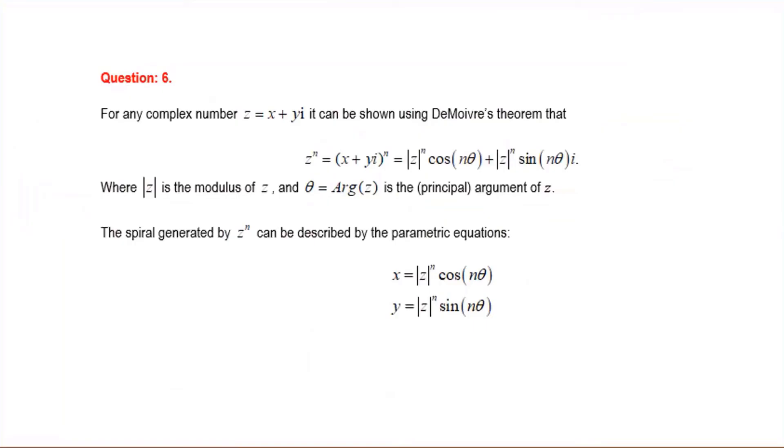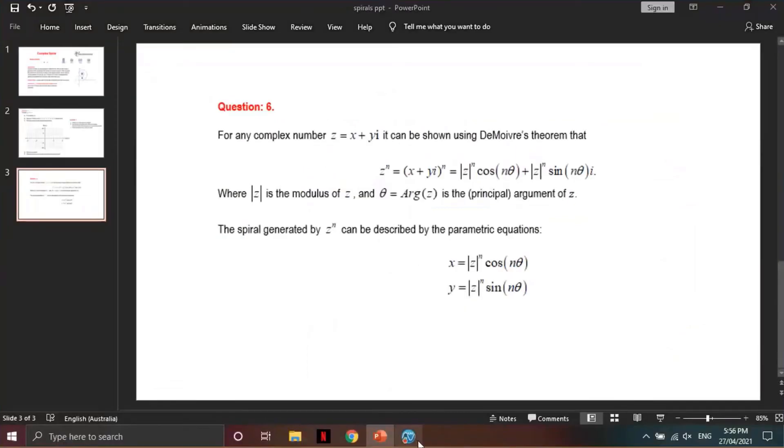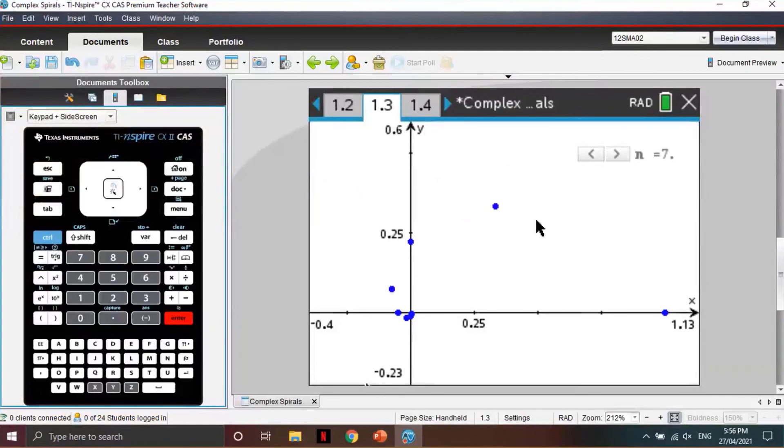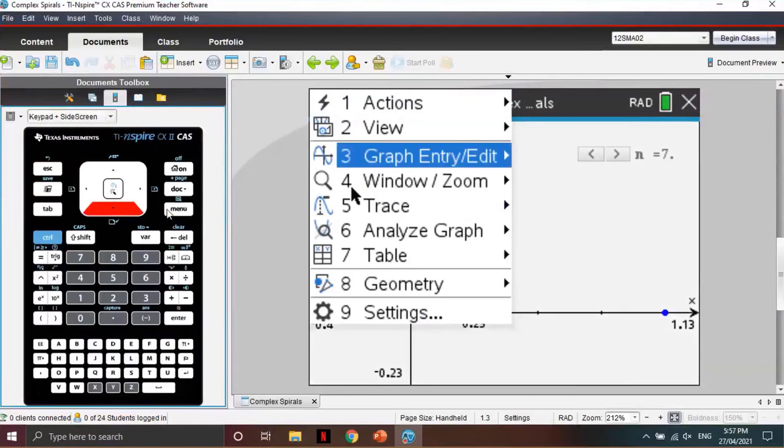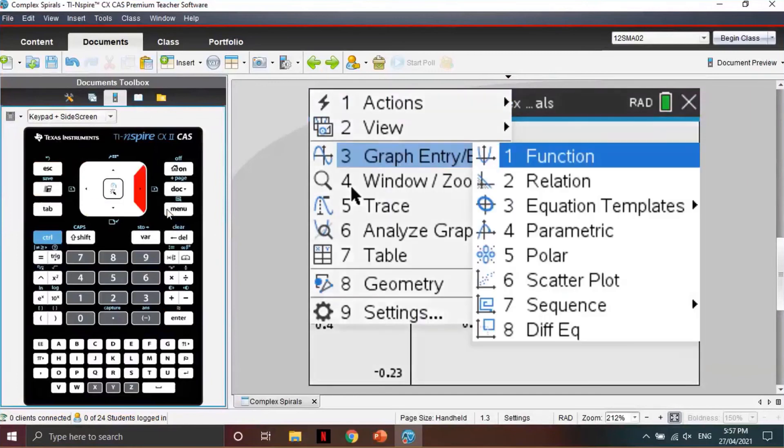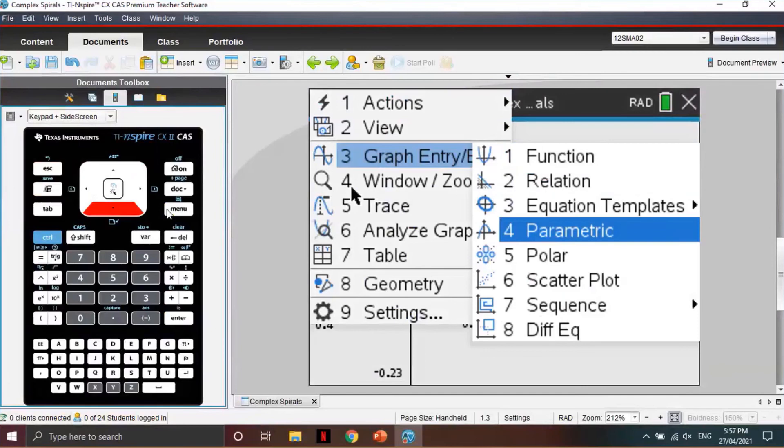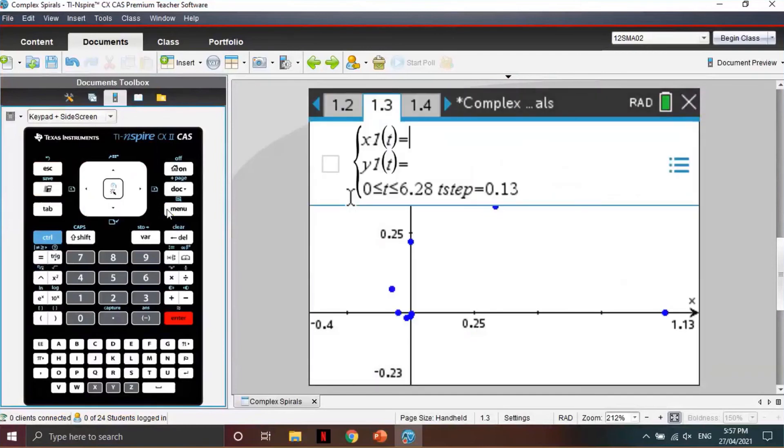In question 6, students will plot the spirals using parametric equations. Once students have plotted their complex geometric sequence on a graphs page, you can press Menu and then go to Graph Entry Edit.